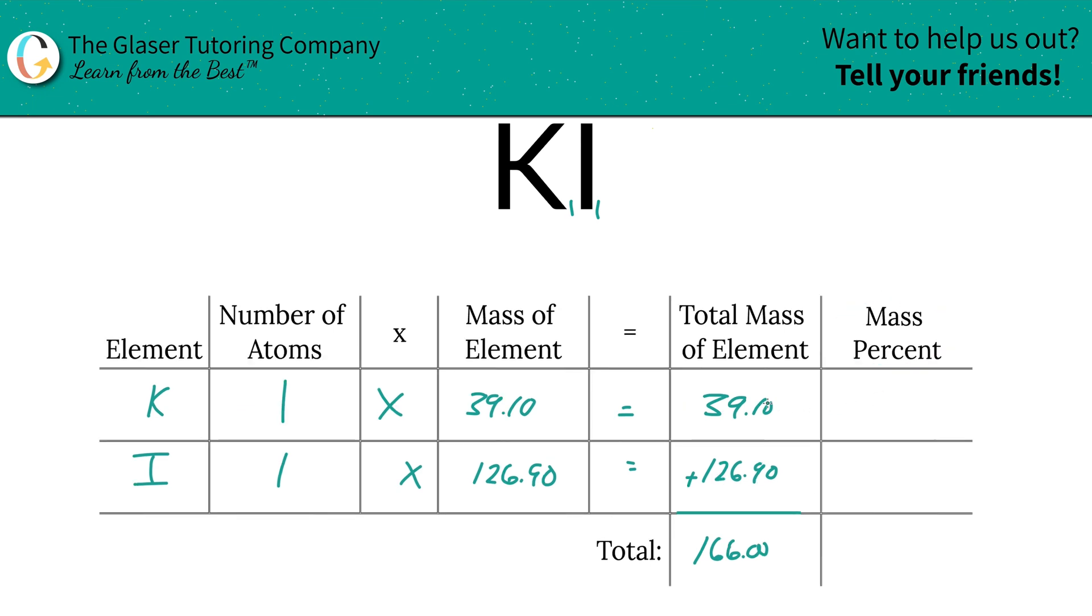So to now find the mass percent, it's very simple. Take the total mass of the particular element, 39.10, and divide it by the total mass of the entire compound, 166. Don't worry about the units because the units will cancel, and this is a simple percent formula, part over whole times 100.